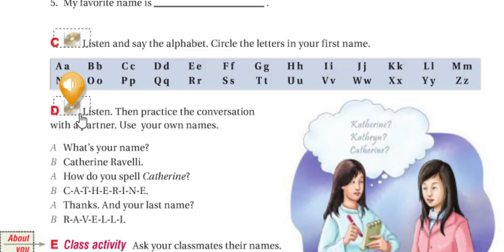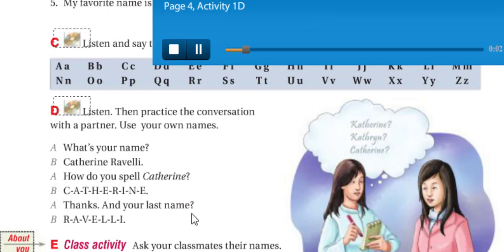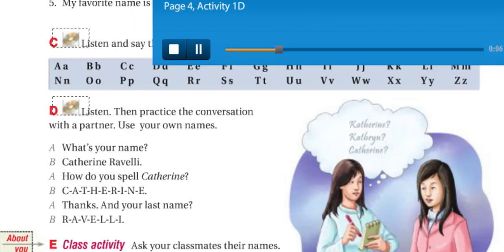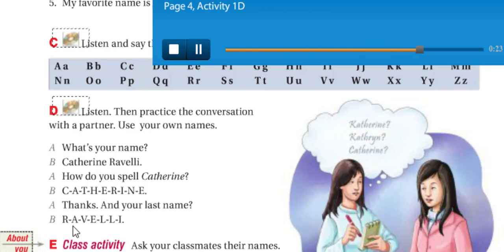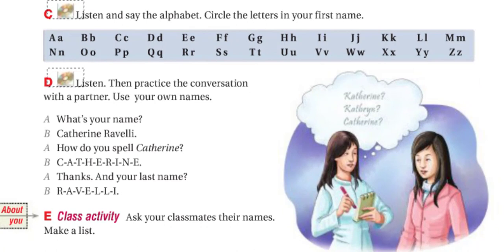Now let's listen to this conversation. Page 4, Lesson B, Saying Names in English. Listen: 'What's your name?' 'Catherine Ravelli.' 'How do you spell Catherine?' 'C-A-T-H-E-R-I-N-E.' 'Thanks. And your last name?' 'R-A-V-E-L-L-I.' Now you have to ask your classmates their names, make a list, and you have to start spelling. So the verb 'spell' — for example, C-A-T-H — and so on. That is spelling.